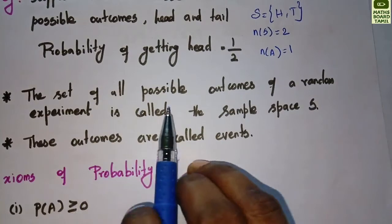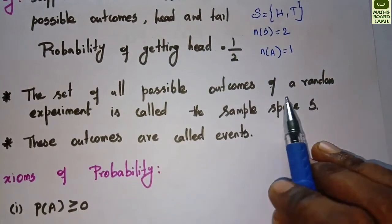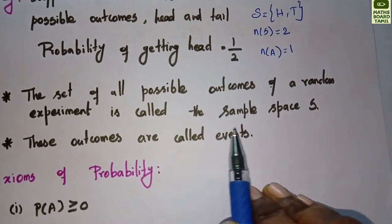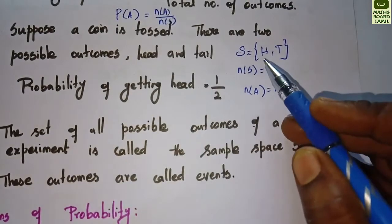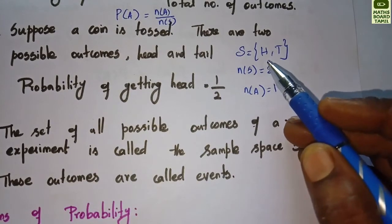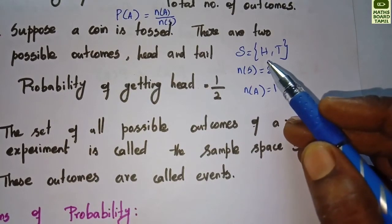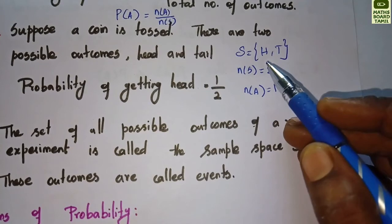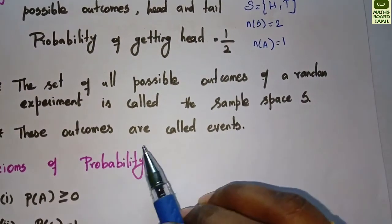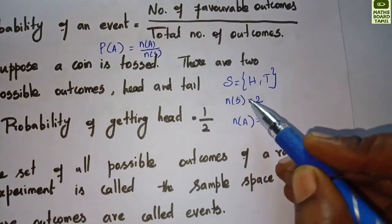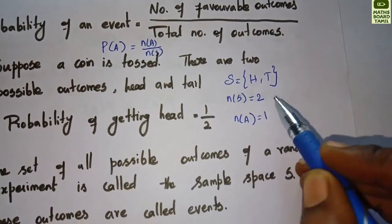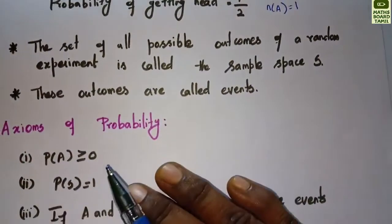The set of all possible outcomes of a random experiment is called the sample space. These outcomes are called events. For example, in a coin toss, the events are H and T.